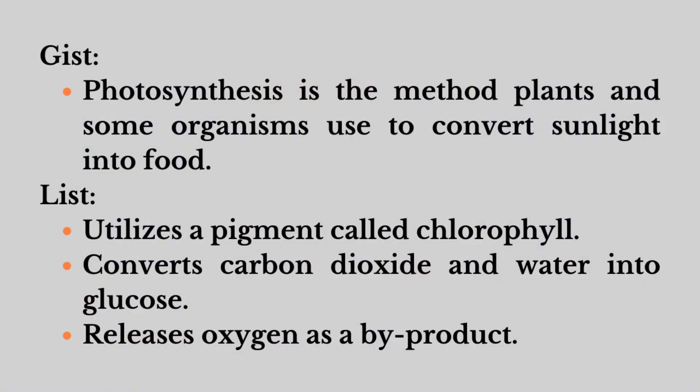So when you take your notes, it might look more like this. The gist is: photosynthesis is the method plants and some organisms use to convert sunlight into food. And then the list: utilizes a pigment called chlorophyll, converts carbon dioxide and water into glucose, and releases oxygen as a byproduct. The beauty of the gist and list method is that it captures the heart of the material while also highlighting important details, making it easier to review and remember. This method can be particularly helpful for students or professionals who need to process and remember vast amounts of information.